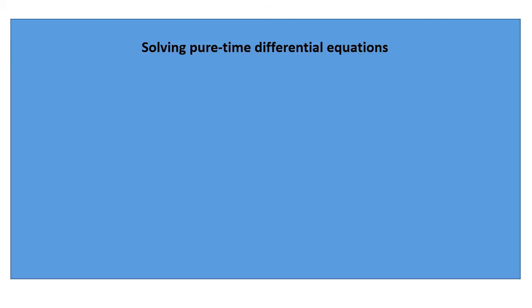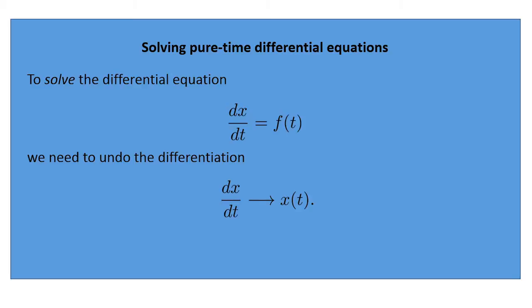Our primary goal when we encounter a pure-time differential equation, other than understanding what it means, will be to solve the differential equation. To solve a pure-time differential equation, we need to do the opposite of differentiation. We are given what the derivative is, i.e., that the derivative dx/dt is f(x), and we want to determine the function x(t) itself. To wrap up this introductory lecture, let's work out a simple example of solving a pure-time differential equation.